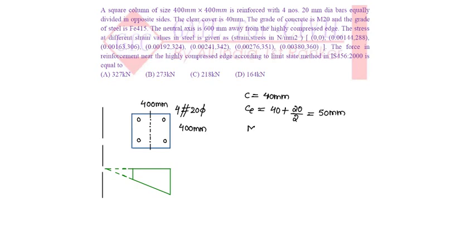M20 concrete and Fe415 steel are used. The neutral axis XU is 600mm away from the highly compressed edge, where our D is 400mm. So XU is greater than D.